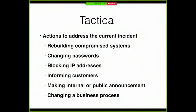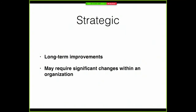Tactics are winning the current battle; strategies are winning the war. Tactical activities are what you're doing to fix the immediate problem: rebuilding systems, changing passwords, blocking IPs, telling customers, making announcements, and changing a business process so this can't happen again in the same way. Strategic improvements are long-term changes in the organization — maybe automated scanning to ensure all systems are updated properly, outsourcing part of security to a cloud service, or even switching from Windows to Linux — things that may take a year or two to implement but really change your threat posture.